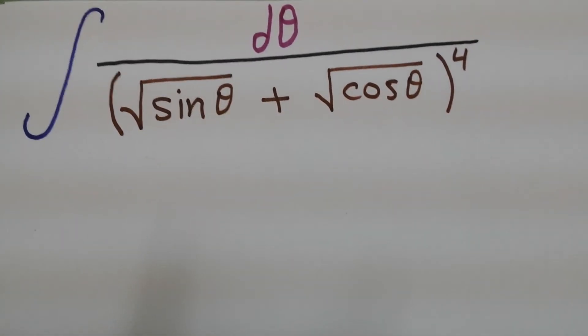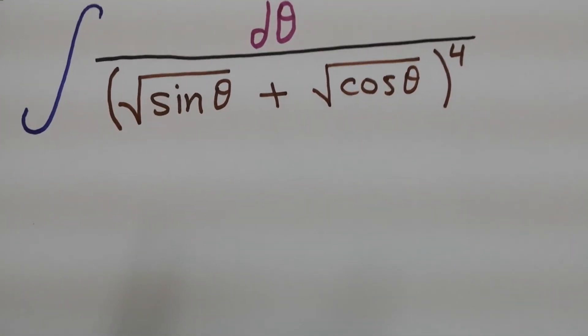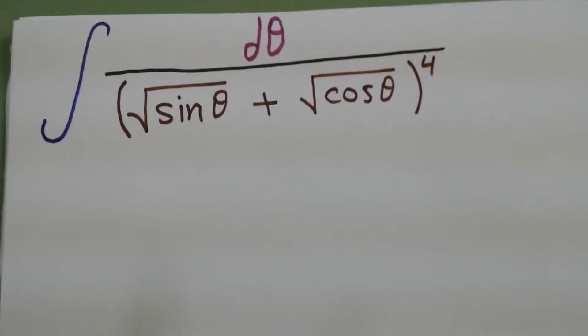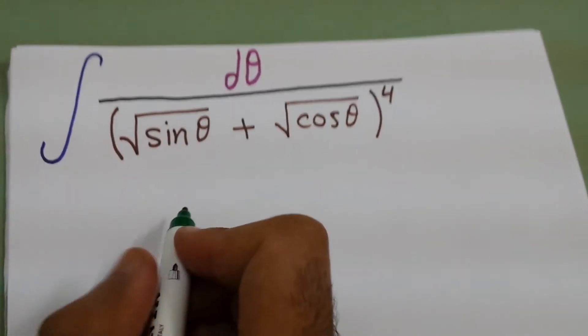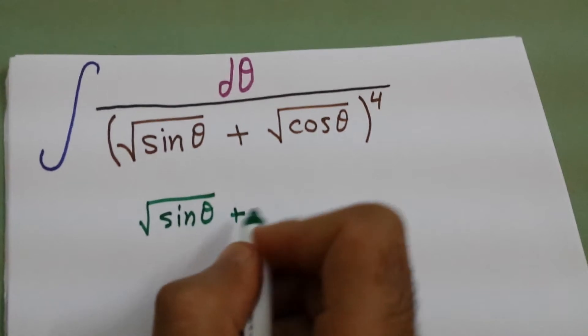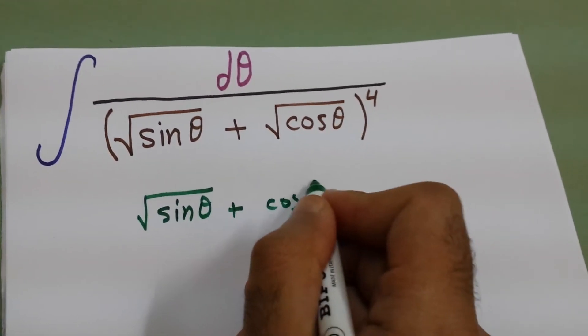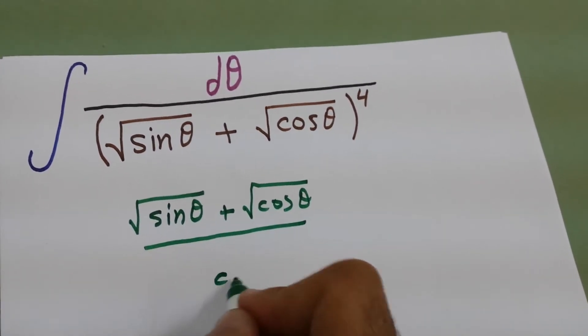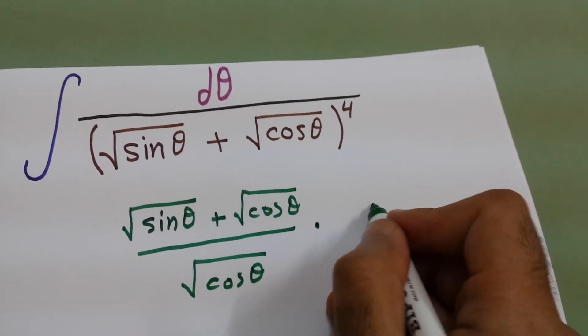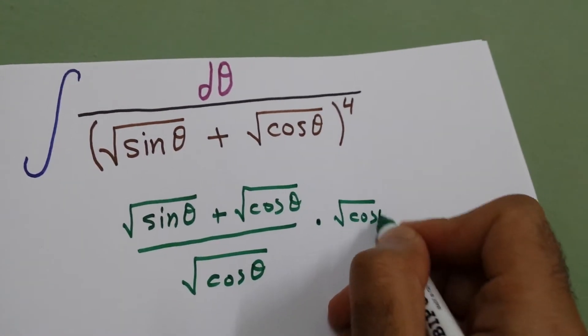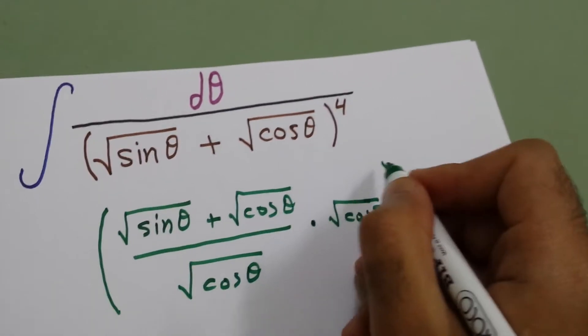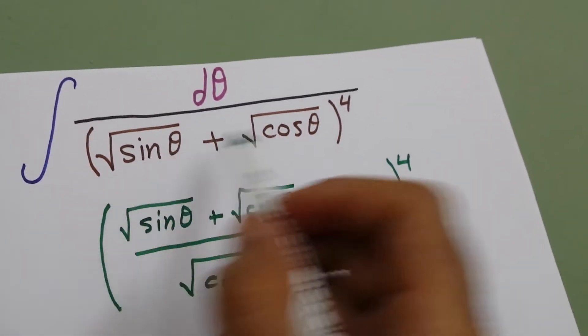In the denominator, inside the bracket, we will divide by cosine theta and multiply by cosine theta. So we have square root of sine plus square root of cosine. We will divide by square root of cosine and multiply by square root of cosine, all to power four. This is just the denominator.